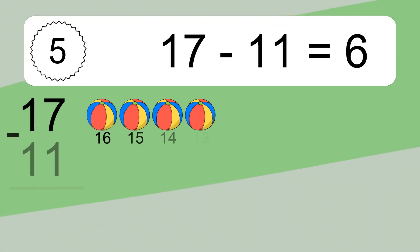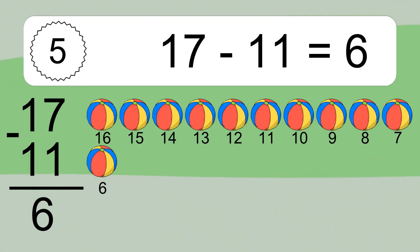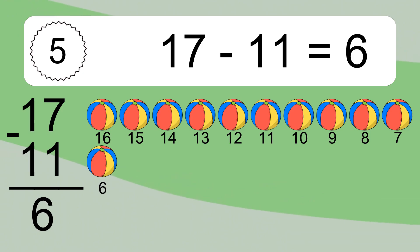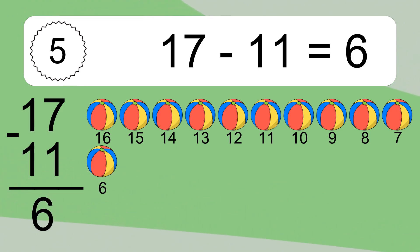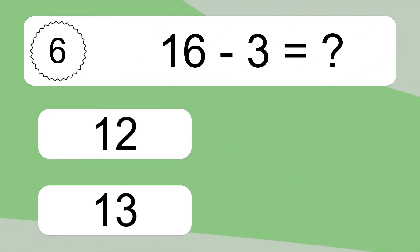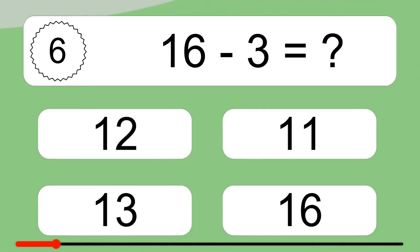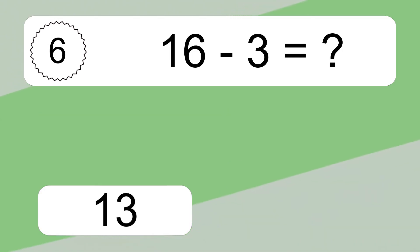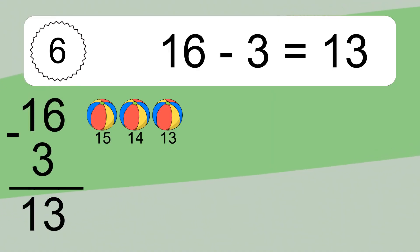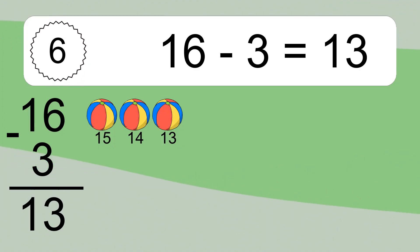17 minus 11 equals what? 17 minus 11 equals 6. Let's count it: 16, 15, 14, 13, 12, 11, 10, 9, 8, 7, 6. 16 minus 3 equals what? 16 minus 3 equals 13. Let's count it: 15, 14, 13.